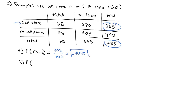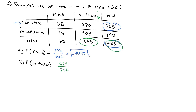Let's ask a similar question: what's the probability that a random person did not get a ticket? The no ticket total is in the second column, with 685 people who got no ticket. We divide that by the total number of people in the study, 755. So 685 out of 755 gives us a probability of 0.9073.